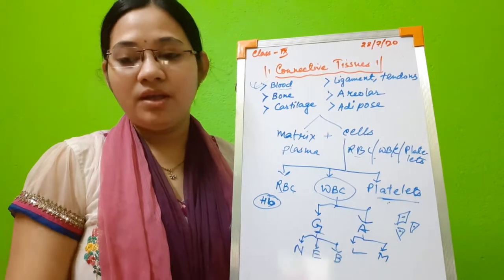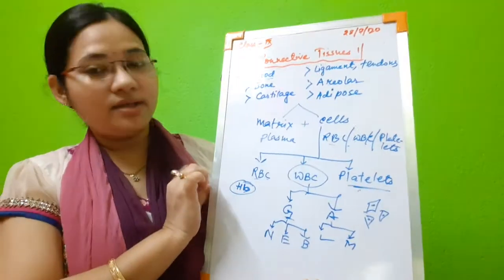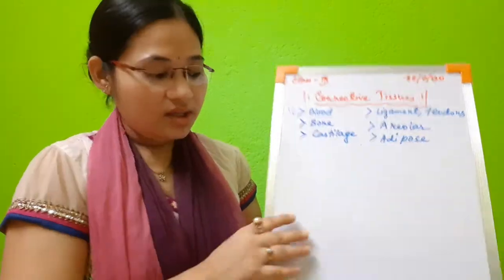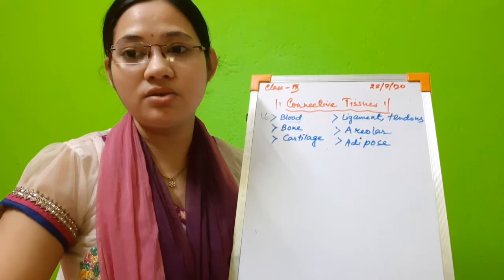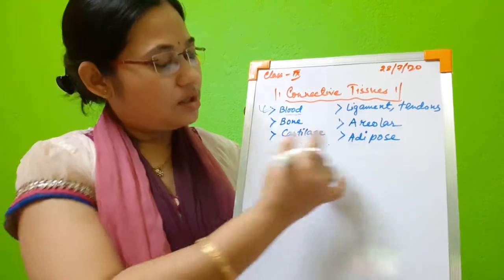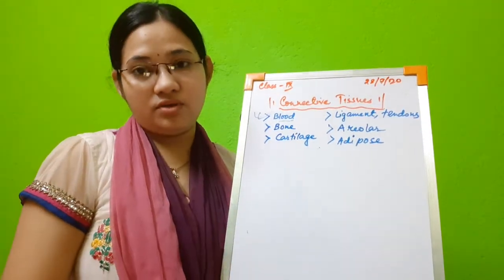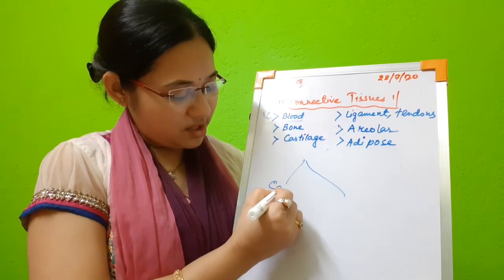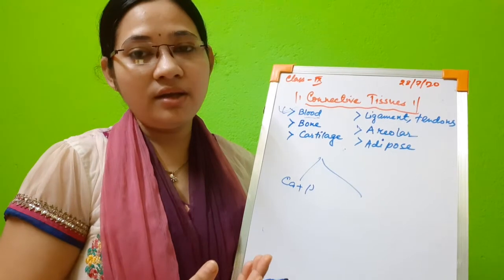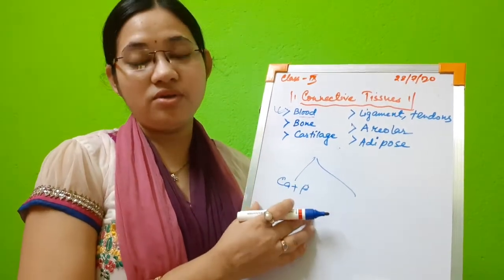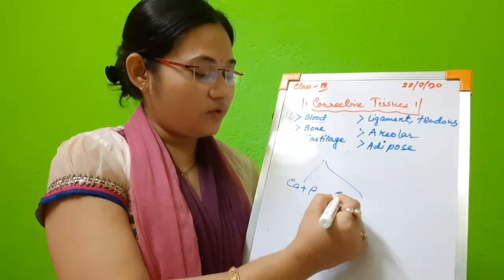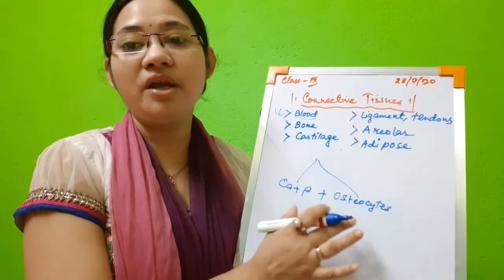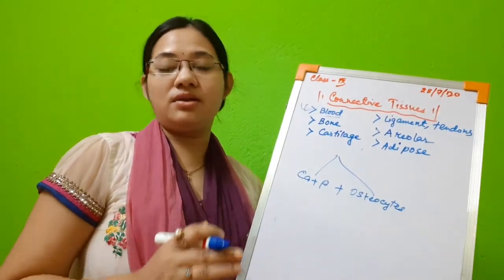Blood is called a fluid connective tissue because it has a fluid matrix. Now let us see the next connective tissue: bones. Bone is a hard connective tissue, whereas blood is a fluid connective tissue. Bones and cartilage are hard connective tissues, whereas areolar tissue and adipose tissue are loose connective tissues.